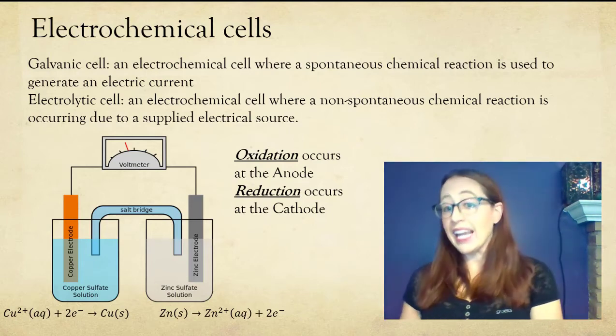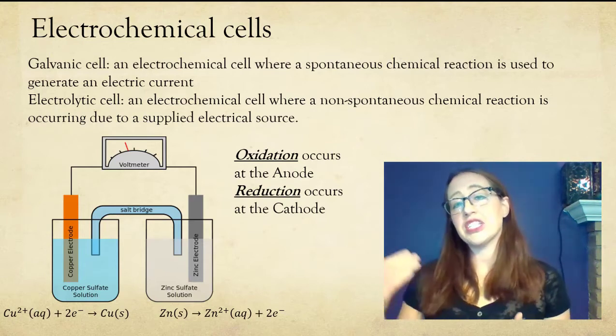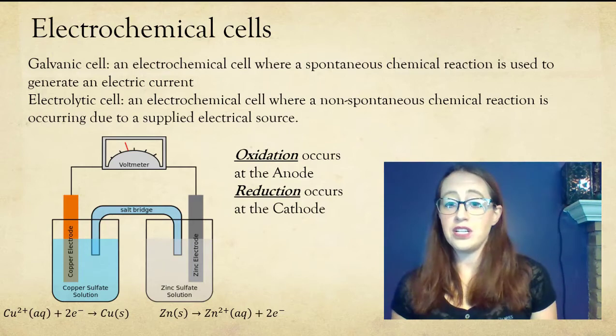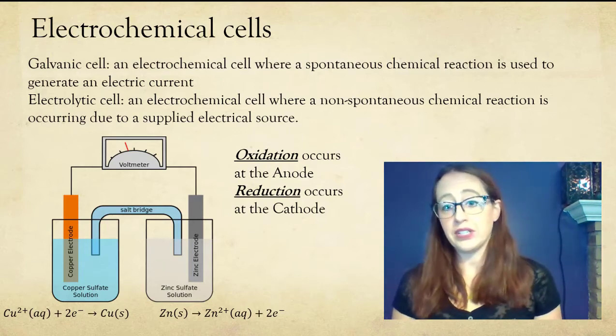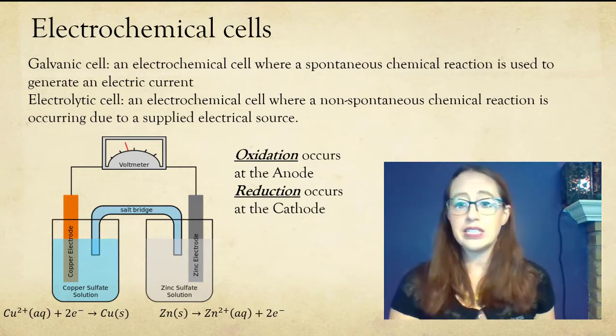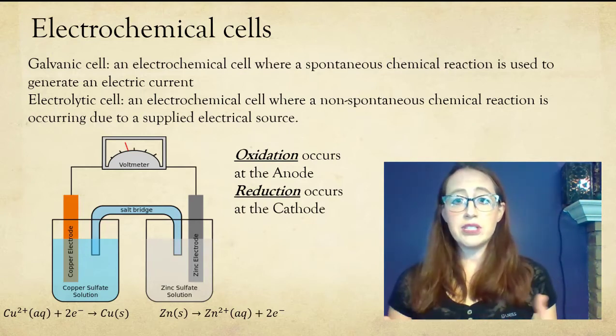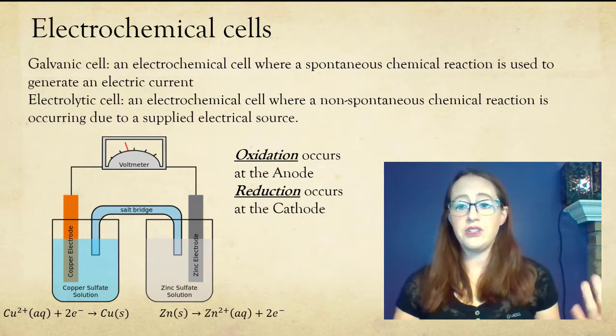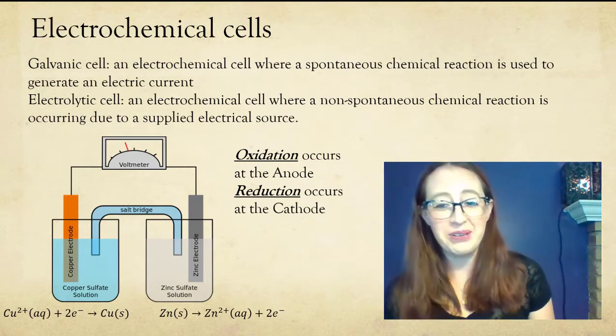In both electrolytic and galvanic cells, oxidation occurs at the anode and reduction occurs at the cathode. This doesn't change based on whether it's an electrolytic or galvanic cell. It's always oxidation at the anode, reduction at the cathode. And of course, the memory trick for this was a red cat and an ox. And you should feel free to come up with your own and let me know if you have better ones.